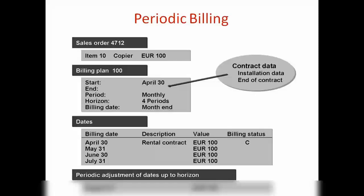For example, if you look at this Periodic Billing scenario: you created an order with a billing plan. Say this is a rental contract and the customer is paying on the last date of every month. So on April 30th they pay 100 euro, on the last date of May again 100, on the last date of June the same, and the last date of July the same.